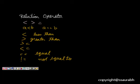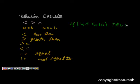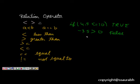Let's take some examples. The expression 4.5 <= 10 will evaluate to true. The expression -35 > 0 will evaluate to false.